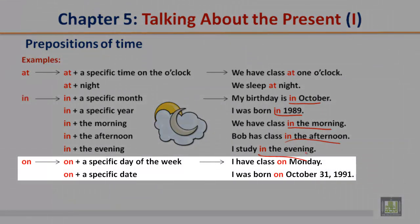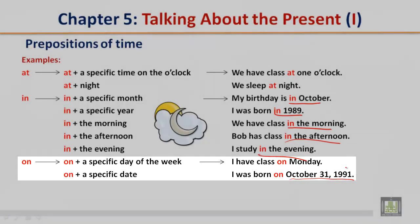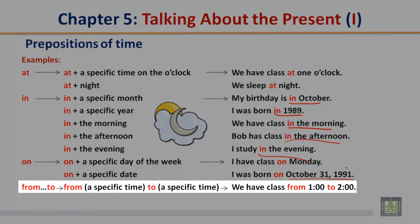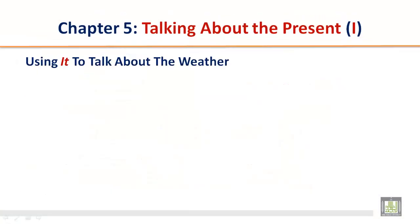'On' plus a specific day of the week: I have class on Monday. 'On' plus a specific date: I was born on October 31st, 1991. 'From' and 'to' — from a specific time to a specific time: We have class from 1 o'clock to 2 o'clock.